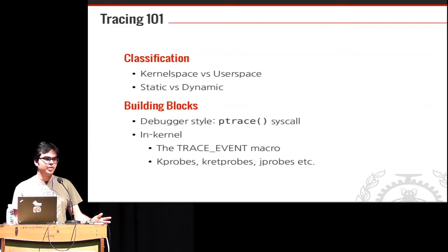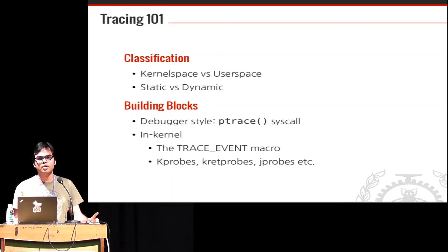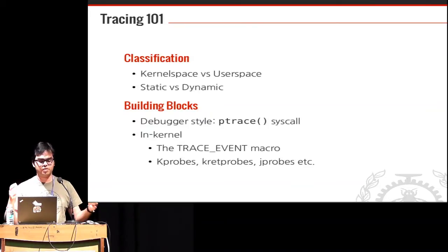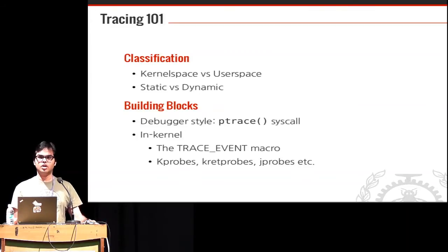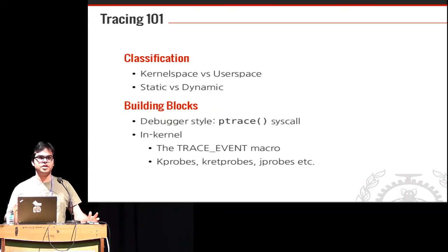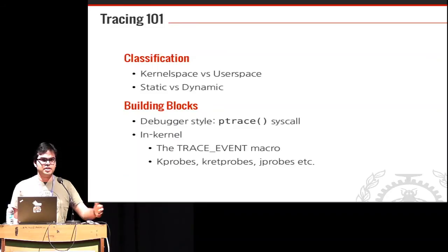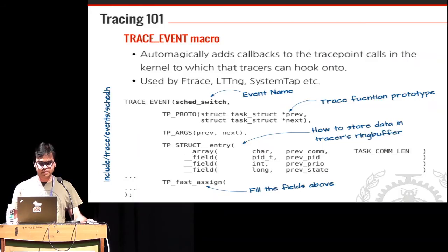The building blocks of a tracer: debugger-style tracers use the ptrace syscall. Most debuggers use ptrace — you can even write your own debugger in roughly 100 lines of code using just ptrace — but it's slow because it's a syscall and requires re-parenting of the process. Inside the kernel there are more intelligent techniques such as the trace_event macro. There are also kprobes, kretprobes, and jprobes, which allow you to dynamically insert probes into your code.